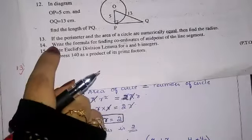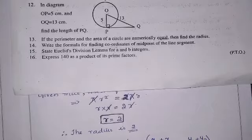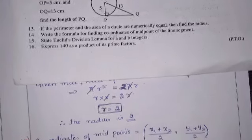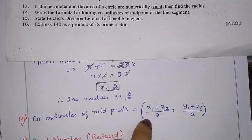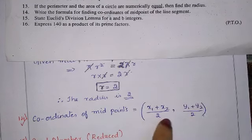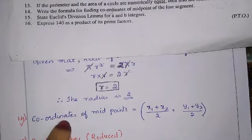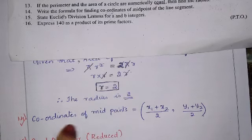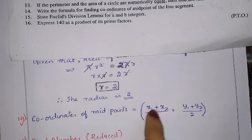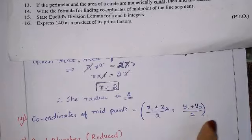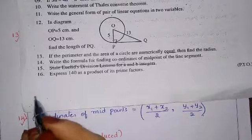Question number 14: write the formula for finding the coordinates of the midpoint of a line segment. The midpoint formula is ((x1 + x2)/2, (y1 + y2)/2). For one-mark questions they often ask for formulas like midpoint or distance between two points.